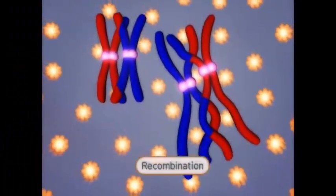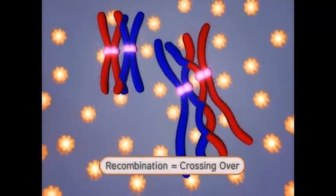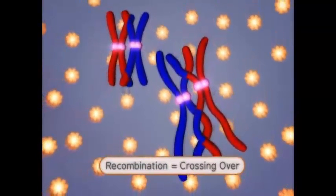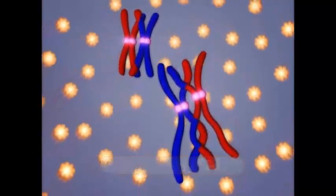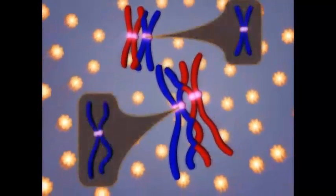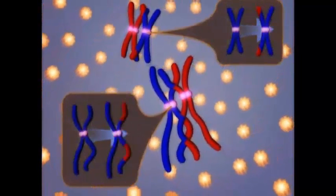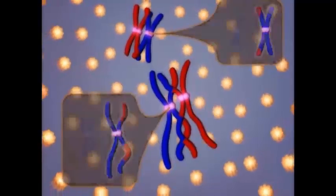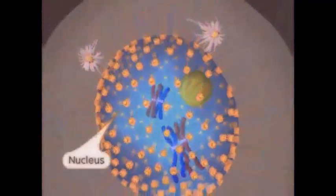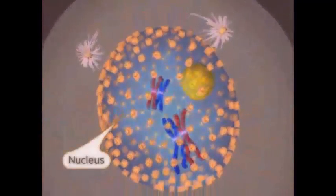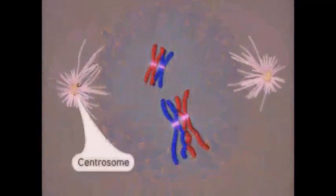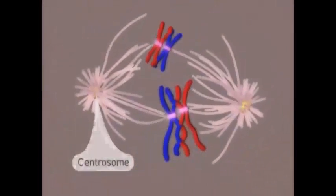Let's look more closely at each of the division events. Meiosis begins with prophase I. In this stage, the DNA condenses to form chromosomes. Here we see the duplicated sister chromatids join together at the centromere. They stay fused at the centromere throughout meiosis I.